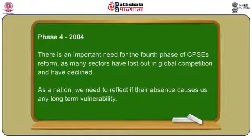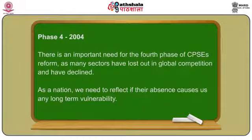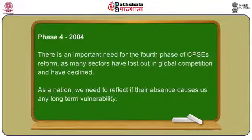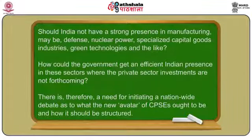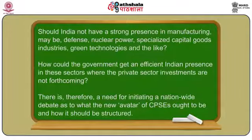The fourth phase started during 2004 with the new UPA government coming into power. During this period, enterprises where losses were very large were instructed to close down or adopt restructuring mechanisms. CPSCs were encouraged to go for listing on the stock exchanges and to establish their presence in international domains. They were also given enhanced autonomy through diversified board performance and by adopting corporate governance norms and practices.